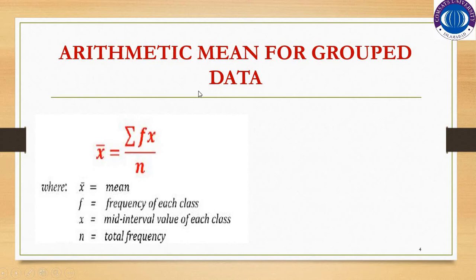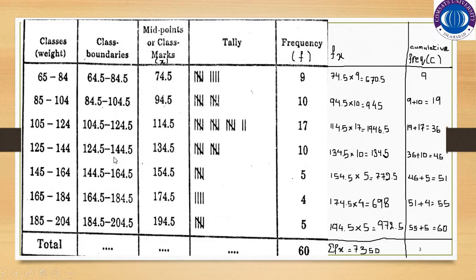As you can see, this is the arithmetic mean for grouped data and you are familiar with this data. This is the frequency distribution — these are the classes, the class boundaries, the class marks, and the frequency of 60 weights of 60 apples collected. We have discussed this data in the previous two lectures and have constructed the frequency distribution and histogram.